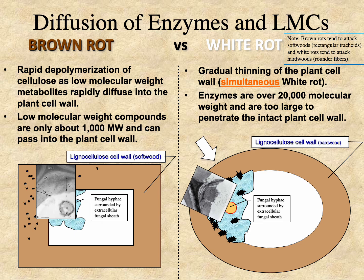With enzymatic action in white rot, you do depolymerize and solubilize both the lignin and cellulosic components — that's well established in the literature. Those components diffuse back to the fungus where both solubilized lignin and solubilized polysaccharides are metabolized by the fungus. So that's the key difference between brown rot and white rot degradation.